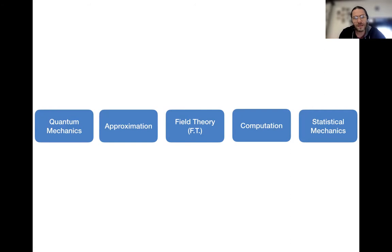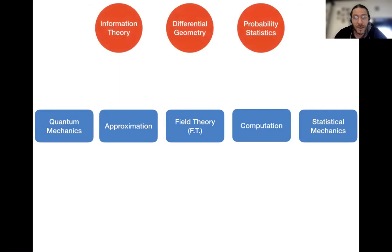In some sense, approximation and computation are complementary to one another. In addition to these pillars, typically in the course, you're led to learn more mathematics. Probability and statistics, if you do statistical mechanics, differential geometry, if you do general relativity, information theory, if you do quantum information.